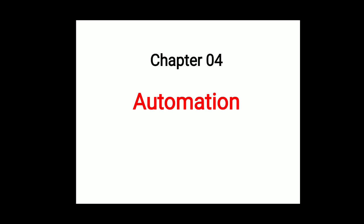There are three types of automation. The first is fixed automation, also called hard automation. The second is programmable automation, also called soft automation. The third is flexible automation.